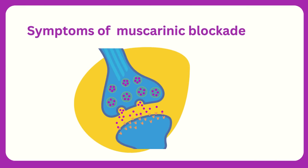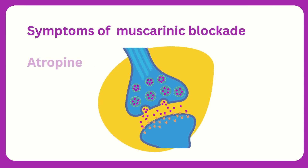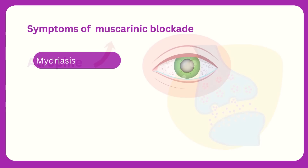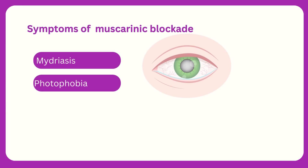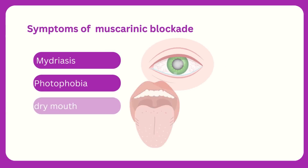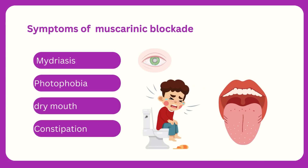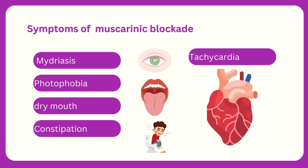Classic signs and symptoms of muscarinic blockade, as with atropine, include mydriasis, which may cause light sensitivity or photophobia; dry mouth and constipation, by decreasing secretory activity and motility in the GI tract; and tachycardia by inhibiting the normal inhibitory cholinergic control of the cardiac system.